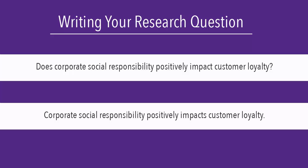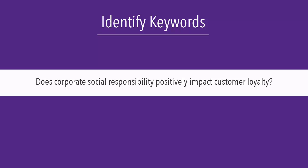It's important to be as concise as possible while still including all of the main points of your research topic. You may need to write several drafts of your question or sentence before you have something you can work with. The next step is to identify the main ideas or keywords in your question or sentence. My keywords are corporate social responsibility and customer loyalty.